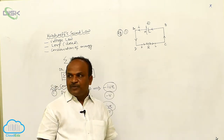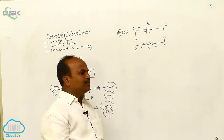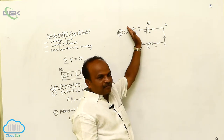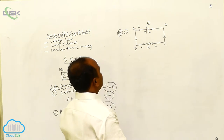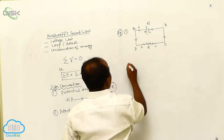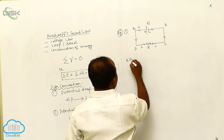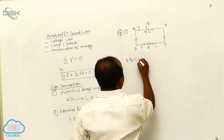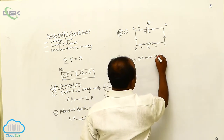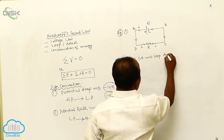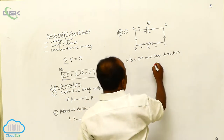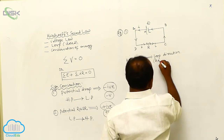How many closed loops are possible? Only one closed loop is possible. The closed loop here means A, B, C, D, A. This is called the loop direction, also known as the arbitrary direction.